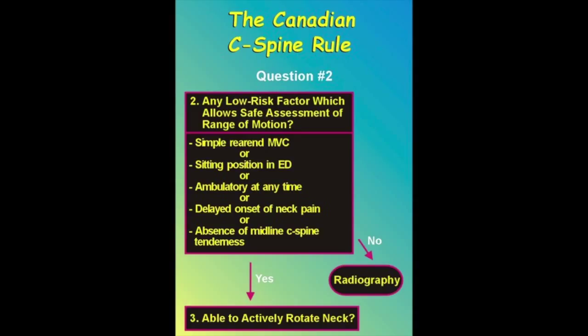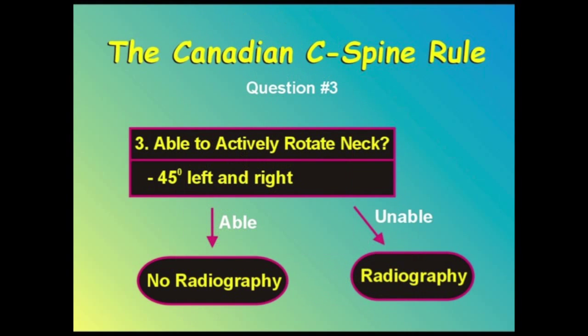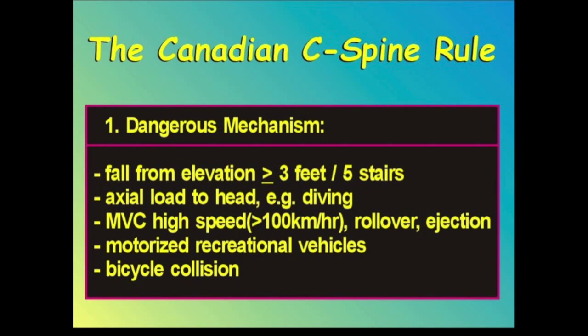We note that the presence of midline tenderness is nonspecific and is not useful. The third step is whether the patient is able to actively rotate their neck — you simply ask them to turn their chin towards their shoulder 45 degrees to the left and to the right.